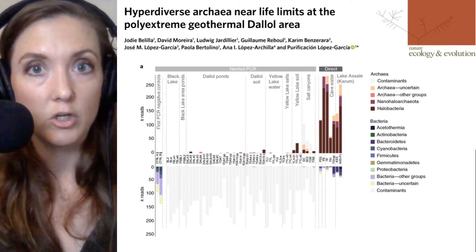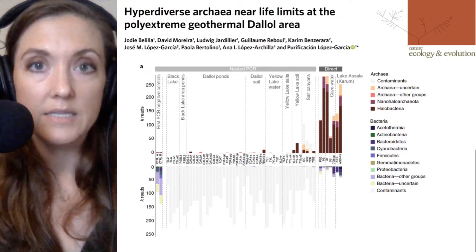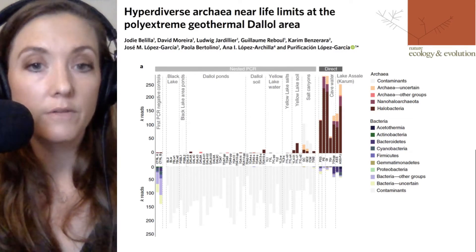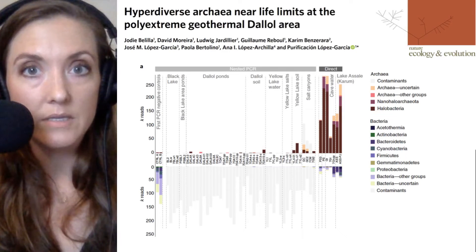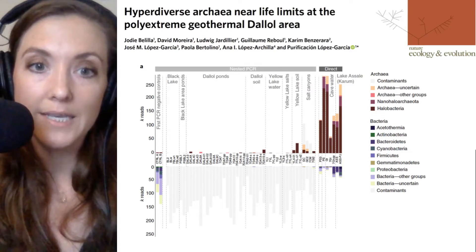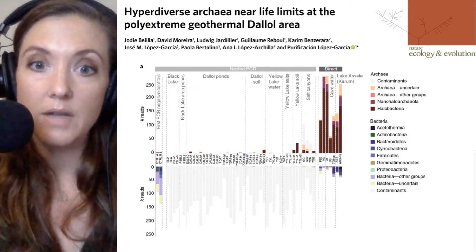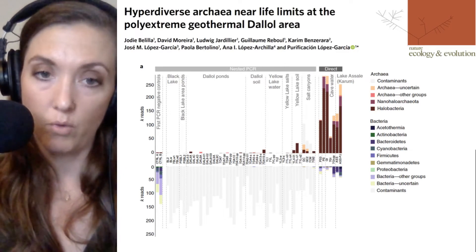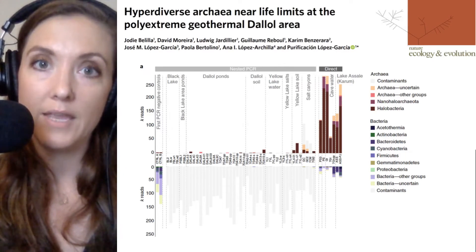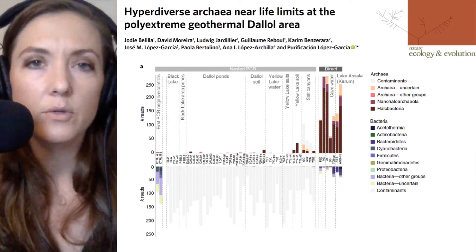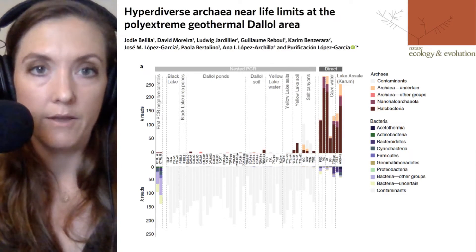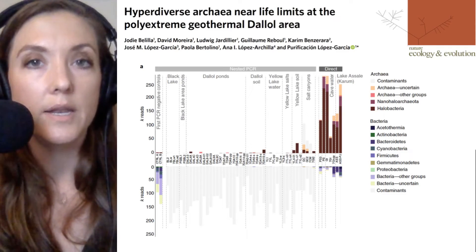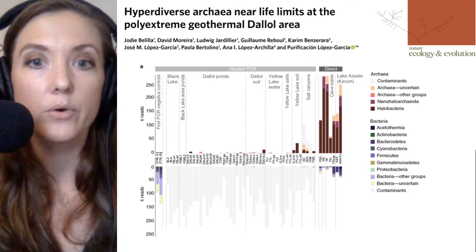Once they were able to verify the sequences, they observed that the majority belonged to archaea. Archaeal sequences dominated, with over 85% of the sequences found classified within archaea. This included a number of archaea that have previously been characterized, including the Rozarchaeota and Nanohaloarchaeota.